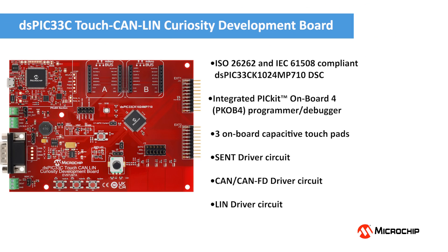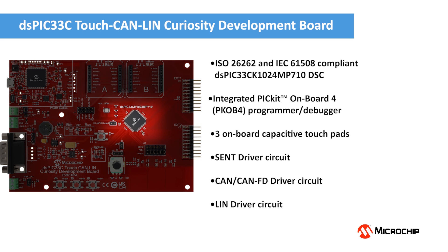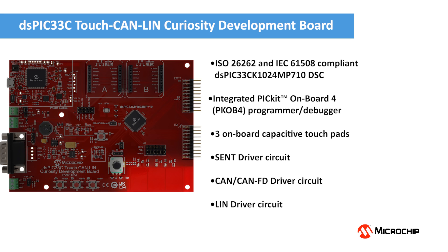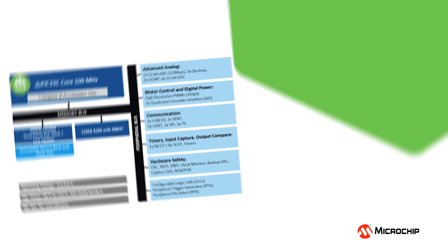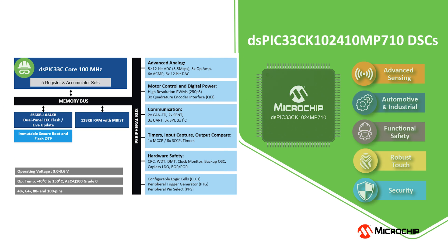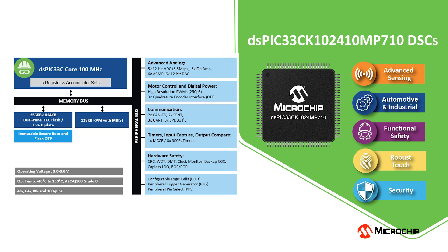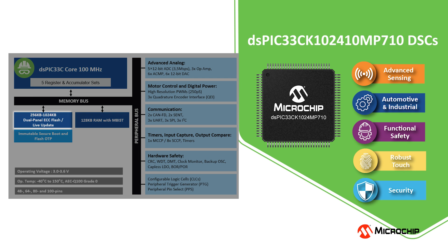Let's look at various resources available on this board. It features a DSPIC33CK1024MP710 digital signal controller with integrated programmer debugger and onboard CAN FD, LIN, and SENT transceivers. The onboard ISO 26262-compliant DSPIC33CK DSC offers one megabyte of flash and 128 kilobytes of RAM.